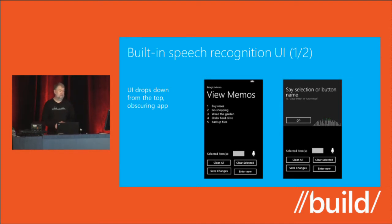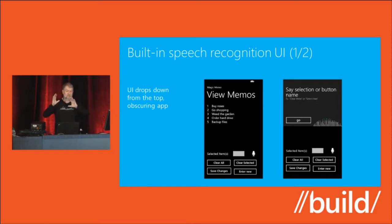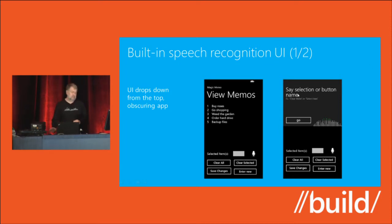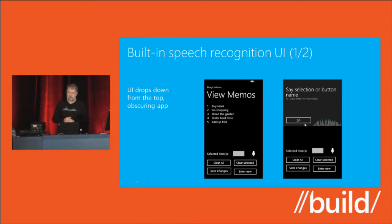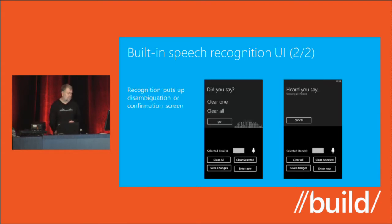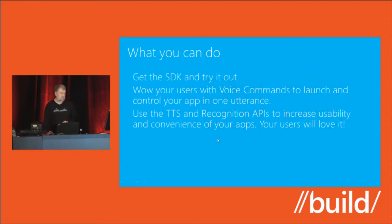Here's a look at the built-in speech recognition UI, from the Magic Memo application. When the user taps the mic button, the UI provided by the system scrolls down and obscures the top of the application, displaying the listen text and example text you specified. The listen text defaults to 'Listening...' if you don't provide anything — that's fine for many applications. The user can speak, and if they're finished before the app thinks they are, they can tap the go button to indicate they're done.